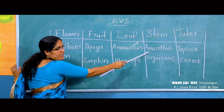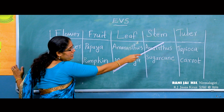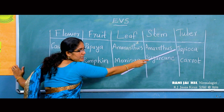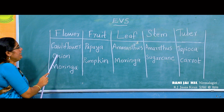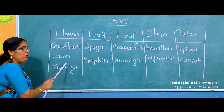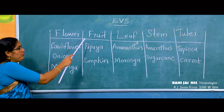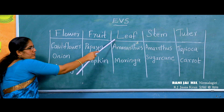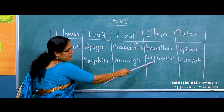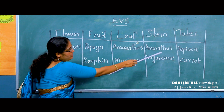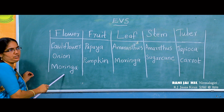We use stem — for example, sugarcane stem we use as food. Tuber — carrot. Onion is also used as food. Pumpkin fruit and muringa leaves are used as food. You can look at this table carefully and observe all the examples.